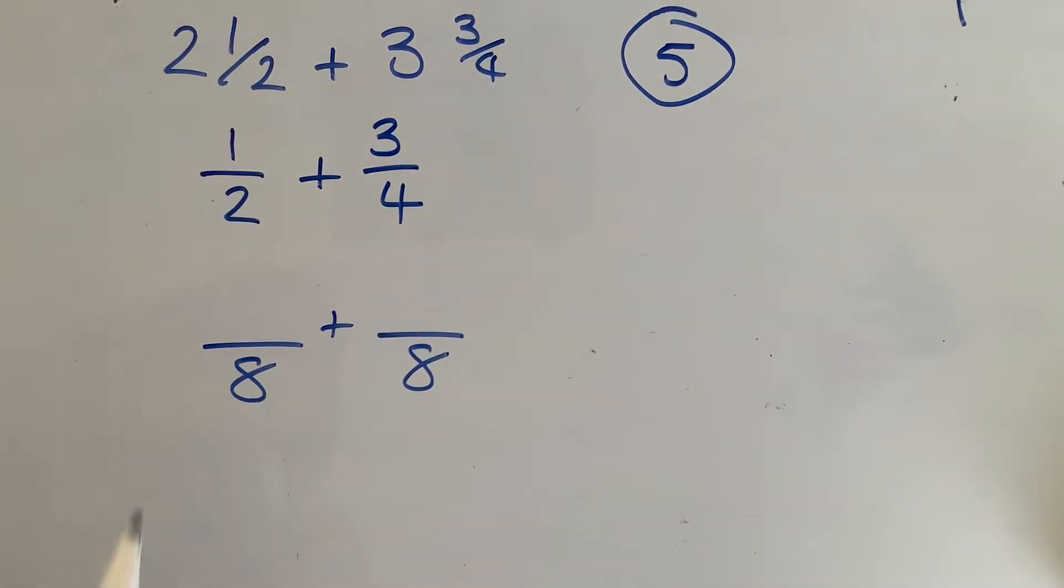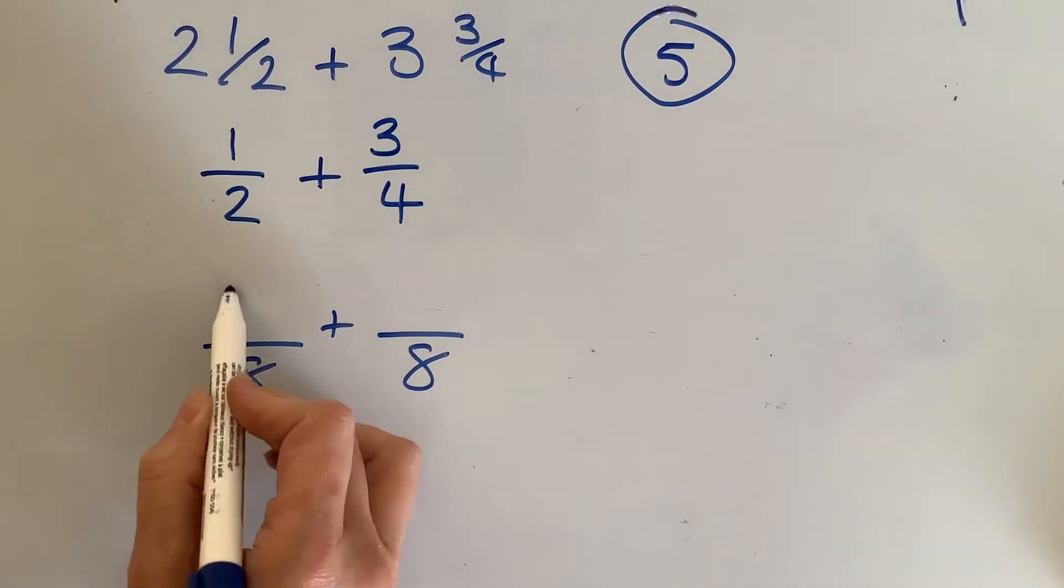So bottom numbers are both 8. So to convert this, I say how many 2's are in 8, well that's 4, so I've got to times the top number by 4, 4 times 1 is 4.